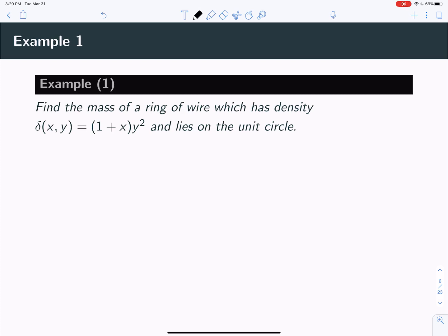All right, so we've just seen what is a line integral, and now what we're going to do is do a couple examples of how you would actually compute some line integrals. So here's a problem: find the mass of this ring of wire which has density δ(x,y) = (1 + x)y² and lies on the unit circle.